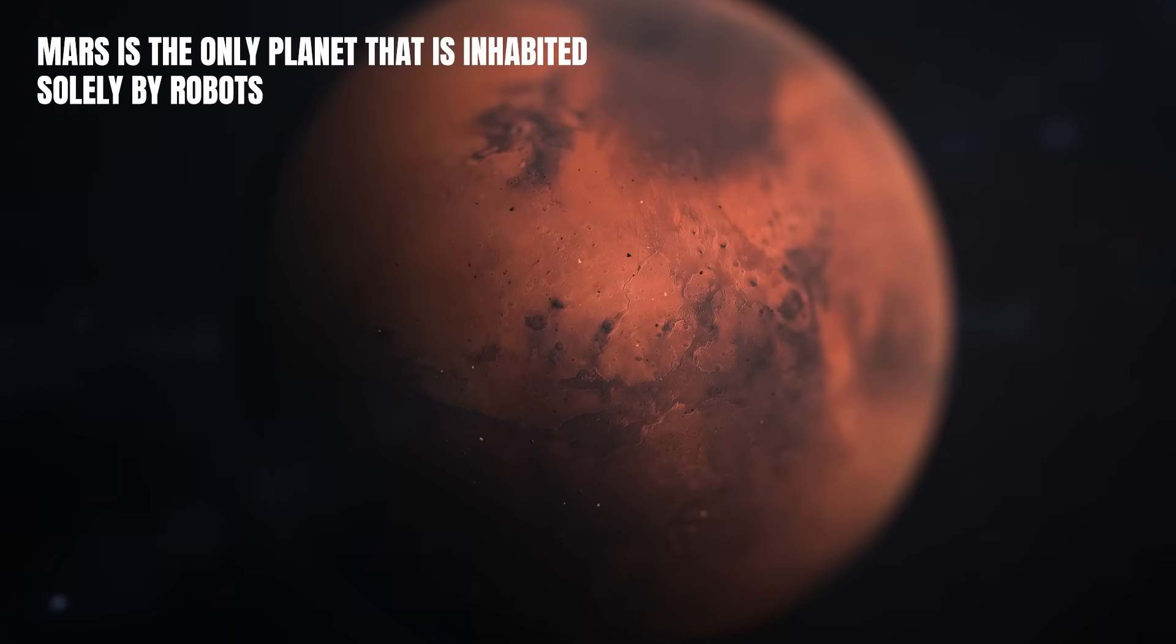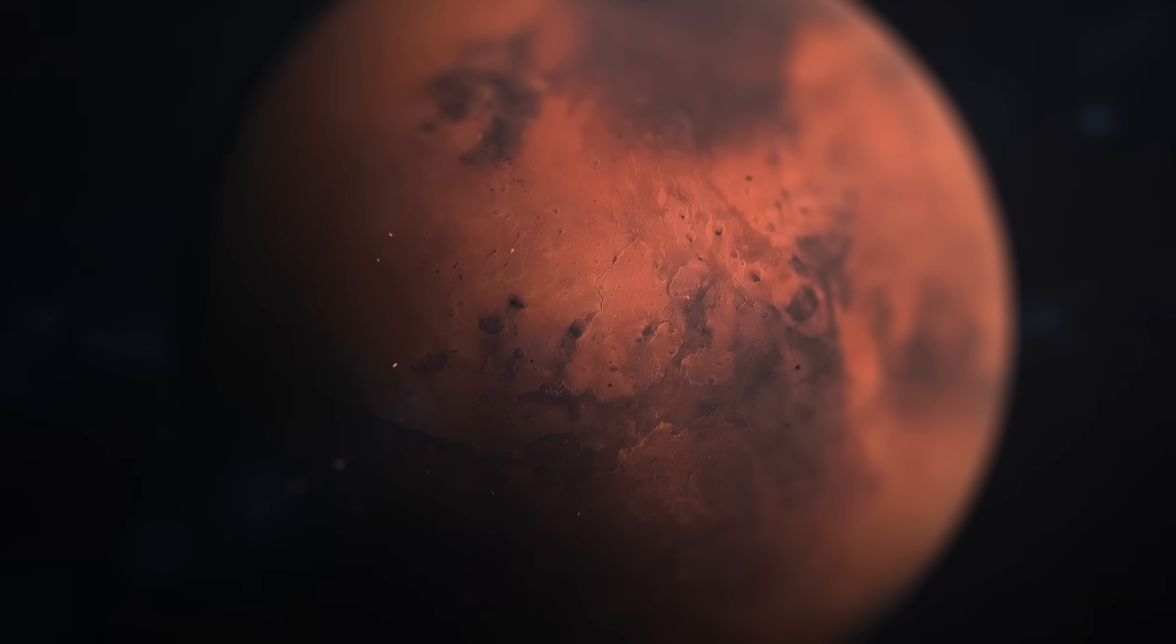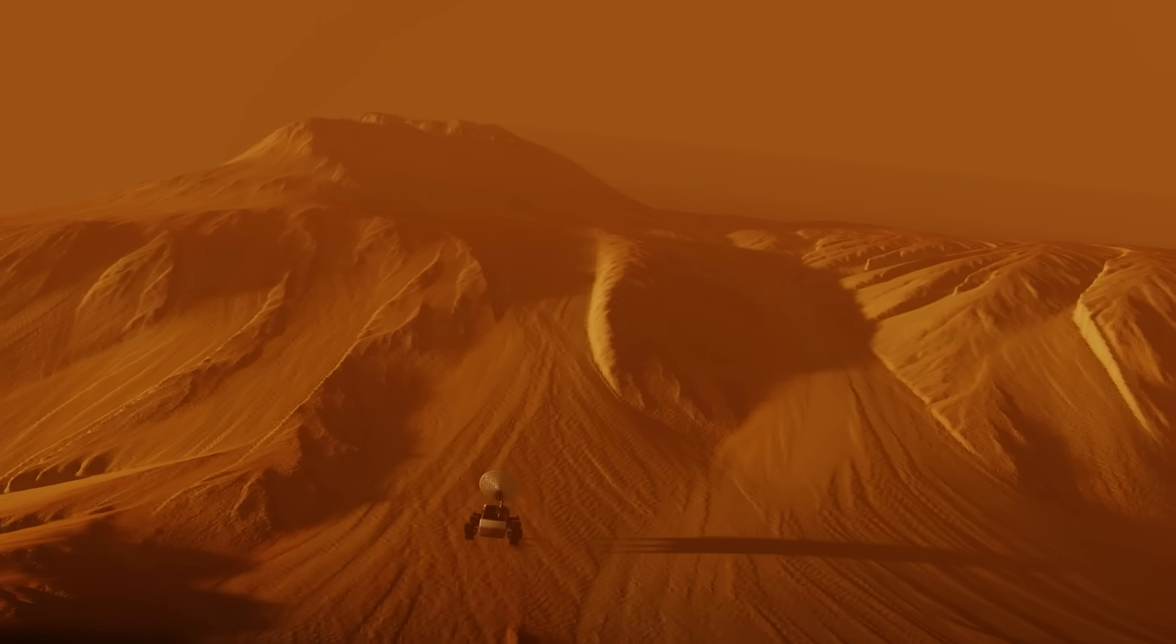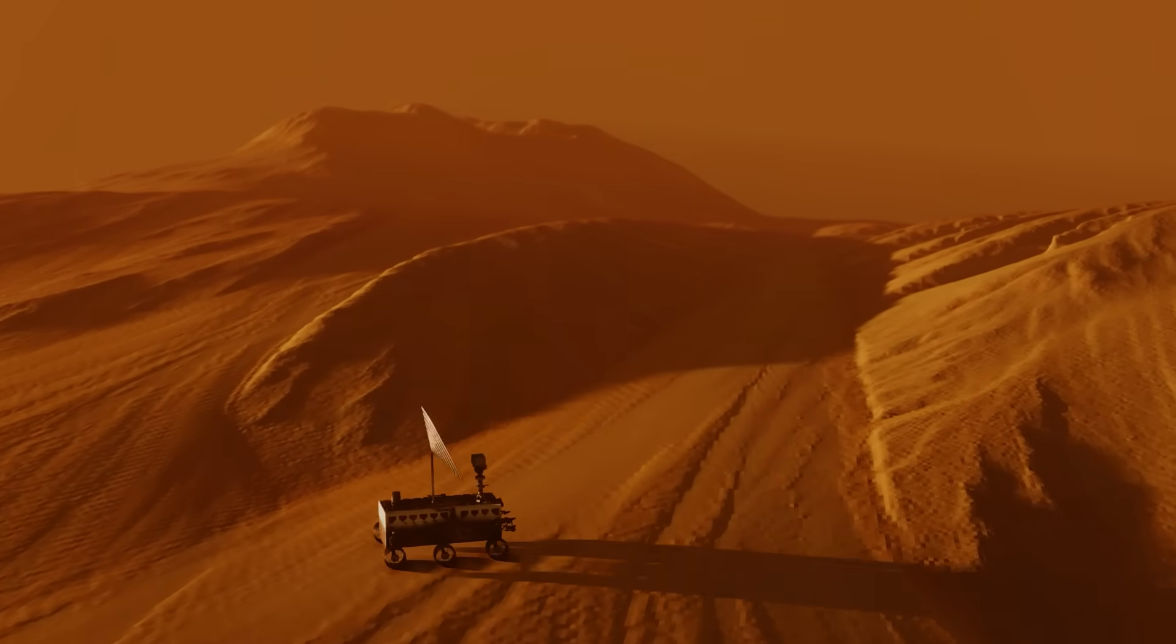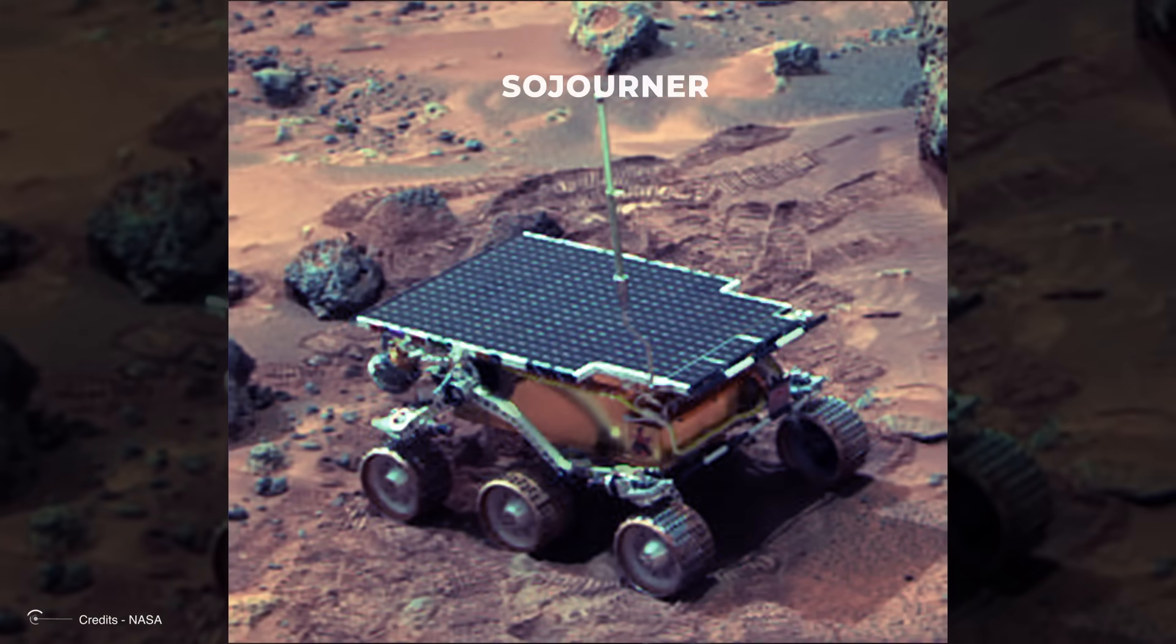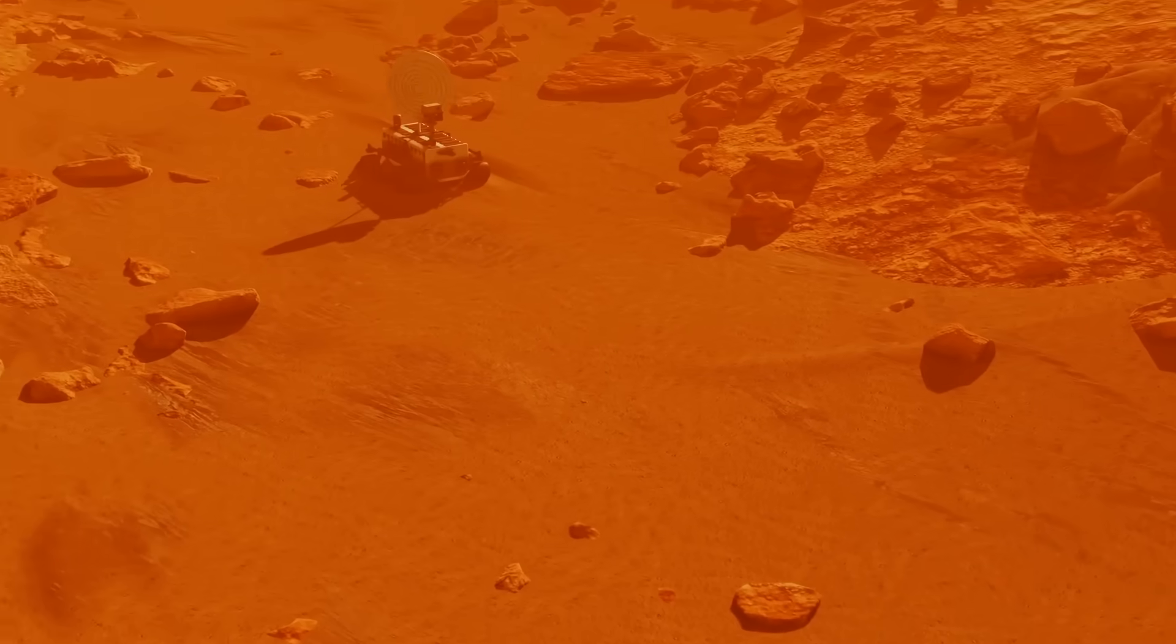Mars is the only planet that is inhabited solely by robots. Although no human has ever set foot on the surface of the red planet, Mars is full of robotic explorers who work tirelessly to unravel its mysteries. Robots and rovers sent by different space agencies have been the only inhabitants of this red planet for decades. It all started in 1997 when NASA sent Sojourner, the first rover to travel the Martian surface.